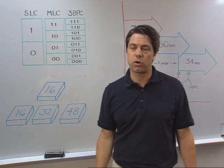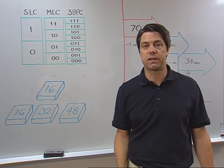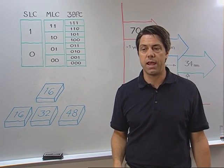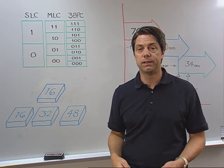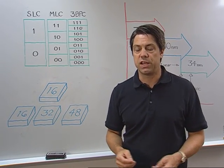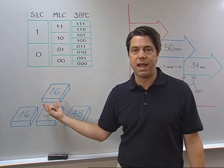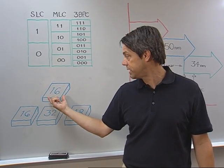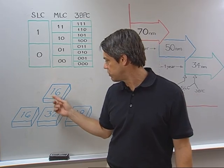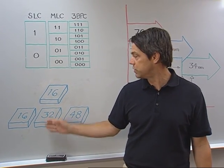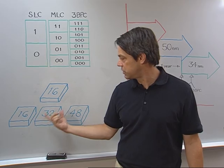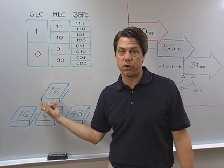We don't do a 48 gigabit product because it's what we consider a non-binary density, or in everyday terms, an oddball density. So what we do is we actually take this array and chop it down somewhere around 10 gigabits. Then when we store three bits per cell, we actually get a 32 gigabit 3-bit per cell product. So what we've done is gotten to 32 gigabits with a smaller die.